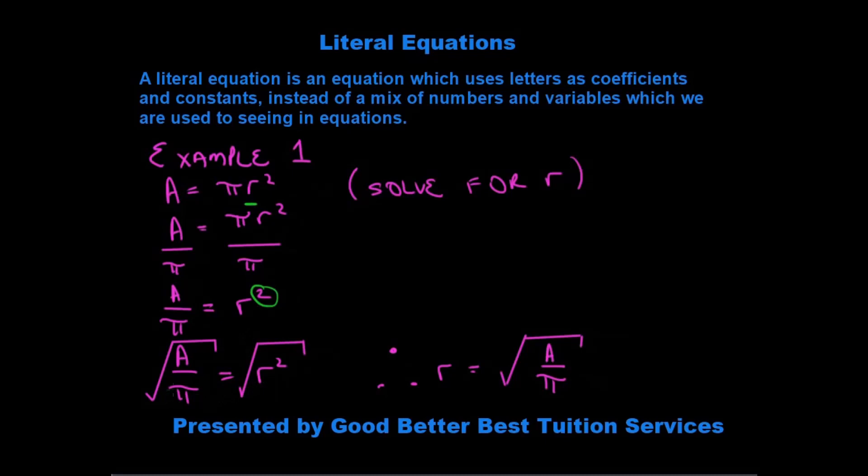But what you do on the left, you must do on the right. So we need to square root the r squared and therefore also square root the a over pi. And when we square root the r squared, the squared will fall away and we're left with r is equal to the square root of a over pi. Did we solve for r? Yes, we did.